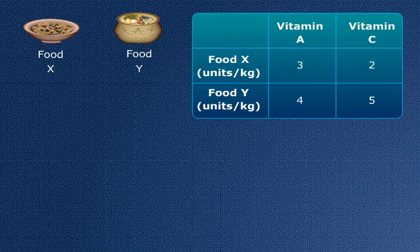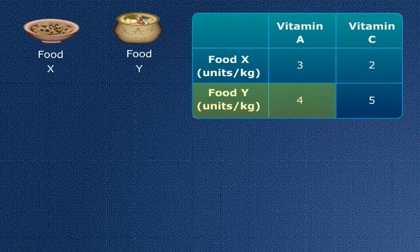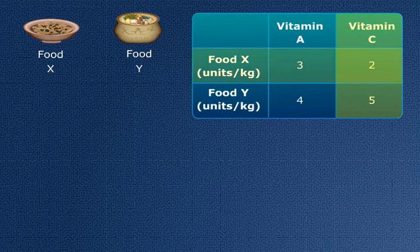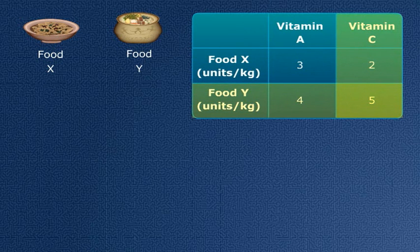This table tells us about the vitamin contents in food X and Y. For food X, there are 3 units of vitamin A per kg. For food Y, there are 4 units of vitamin A per kg. Similarly for vitamin C, there are 2 units per kg for food X and 5 units per kg for food Y.